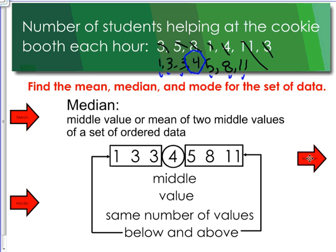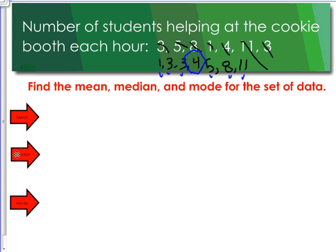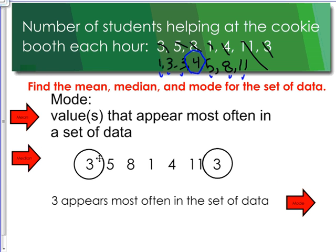And last but not least, we have the mode. The mode is the number that occurs most often. So in our list we have to look for a number that comes up most often, and in that case it is 3. So we have two threes.